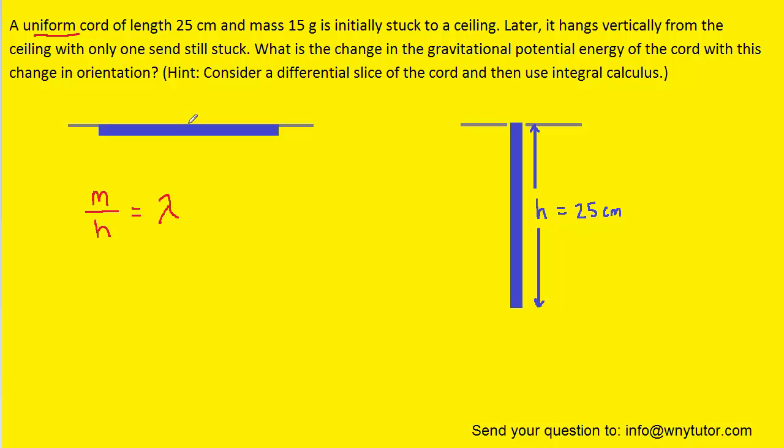We are next going to consider a differential element along the cord, a very small section of the cord whose length, because it's so small, can be represented as dx. So that would be just this very tiny distance right here. Now we'll notice that this differential element is located a distance that we can call x from the end of the cord that remains pinned to the ceiling.